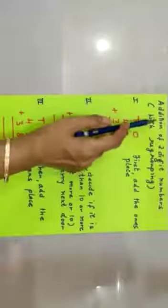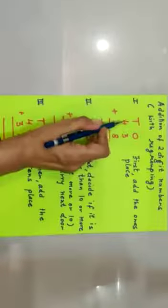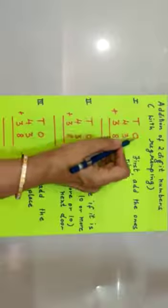Now next is addition of two digit numbers with regrouping or with carry over. Here we have to follow three simple steps. Step 1: we have to first add the ones place. So 43 plus 38. So we have to add ones place.